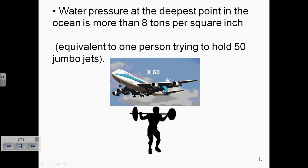As I mentioned, another influence that affects the ability to see down below is the amount of intense pressure. The water pressure at the deepest point in the ocean is more than eight tons per square inch.